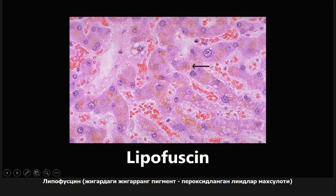The other important thing is that it's seen with normal aging — there's no pathology associated here. This is something you'll get as you age. It deposits in the heart, the liver, and a couple other structures. If you see this, don't necessarily jump to a condition like hemochromatosis. Really look back at the vignette and the information they're giving you.